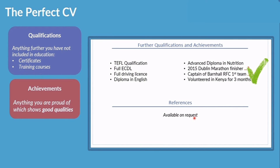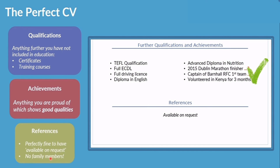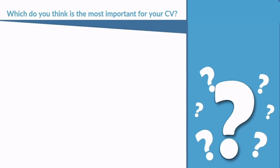Finally, for references on your CV, it's perfectly okay to write 'available on request' - meaning if they want references, they'll ask later. If you are including references, two is usually enough. And remember: no relatives, no family members as references.